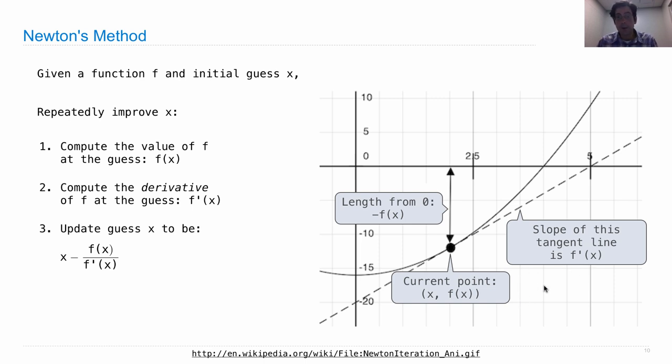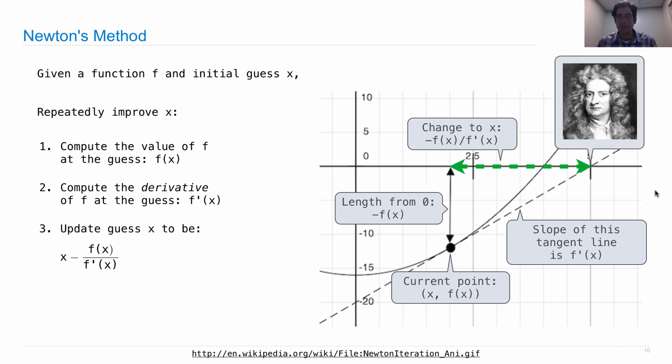Which means we can compute how far to go in the horizontal direction in order to have followed this line all the way until it intersects with the x-axis. So the change to x that we need to make is negative f of x divided by f prime of x, which brings us to this point, Newton's point. That is Isaac Newton claiming his territory by reaching the zero of the tangent line, x minus f of x over f prime of x.